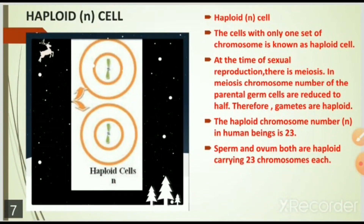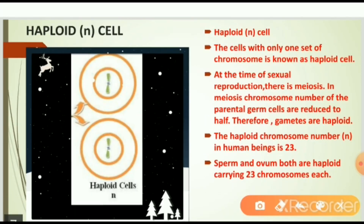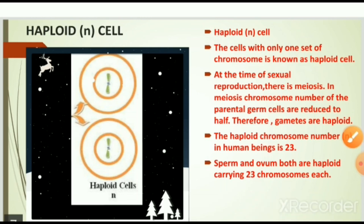Now we will see haploid n cells. With the help of a diagram, we can see only one set of chromosomes in each cell. The cells with only one set of chromosomes are called haploid cells. During sexual reproduction there is meiosis, in which the chromosome number of parental germ cells is reduced to half. Therefore the gametes are haploid. The haploid chromosome number n in human beings is 23 — sperm and ovum are both haploid, each carrying 23 chromosomes.